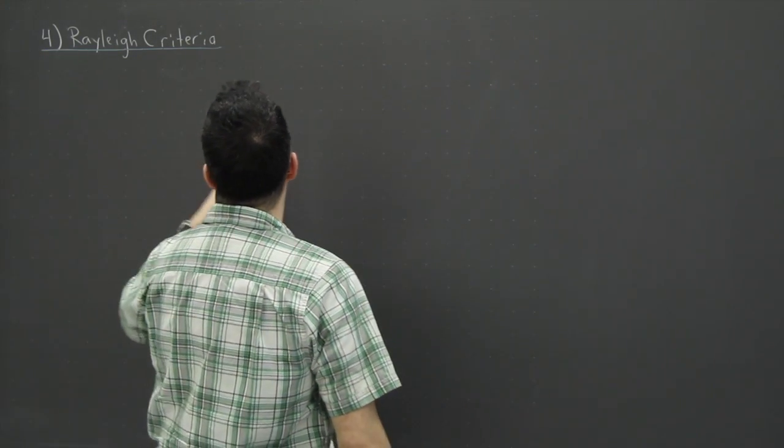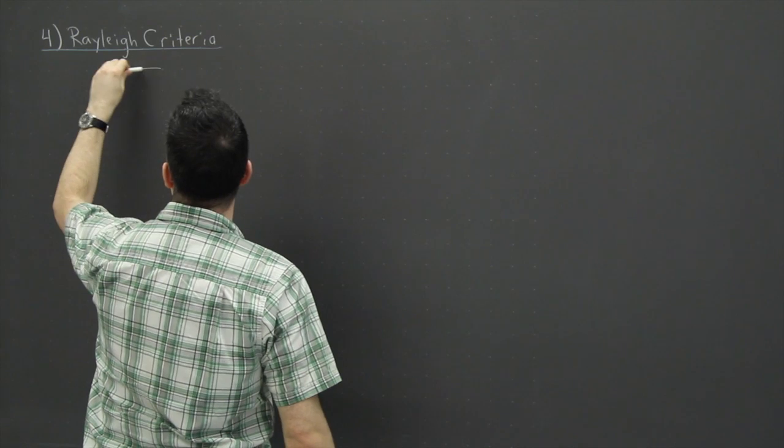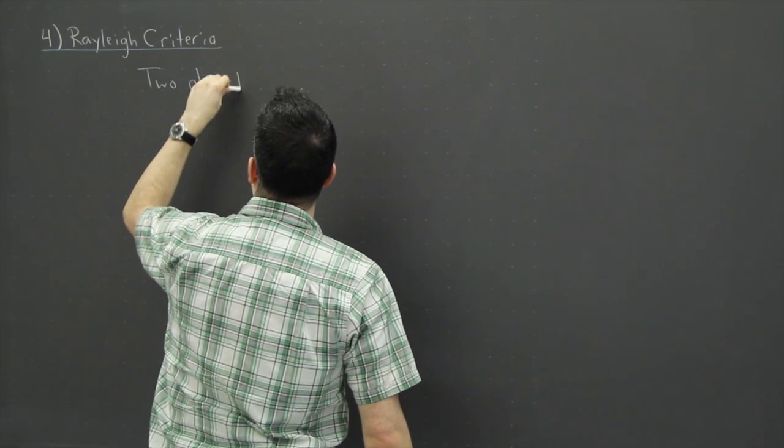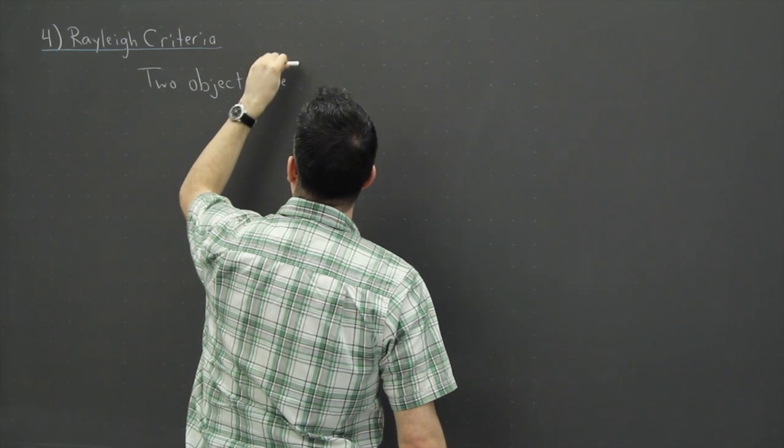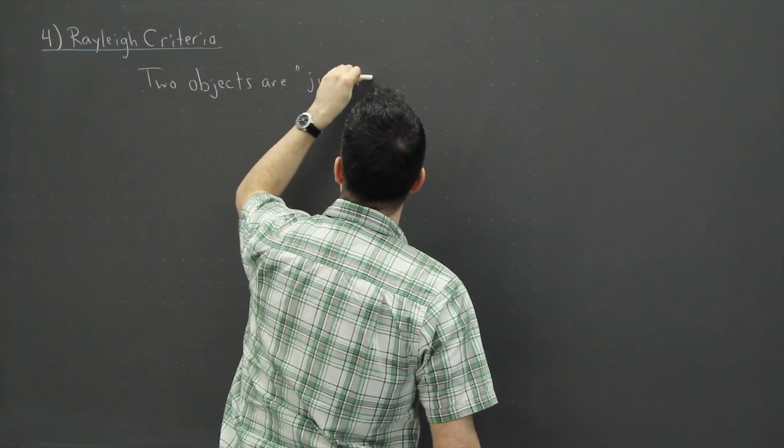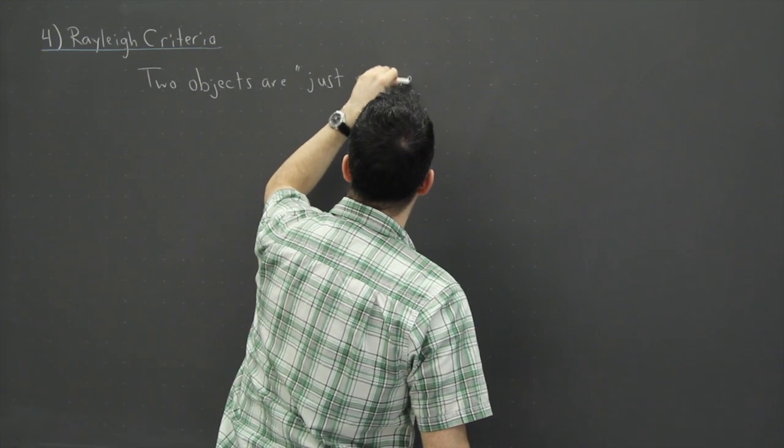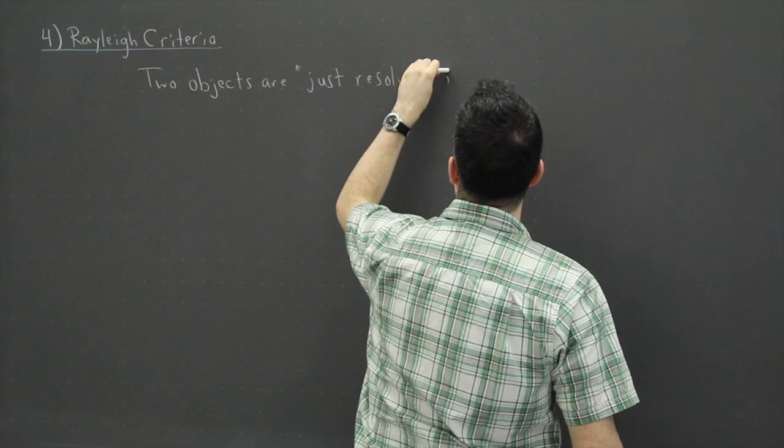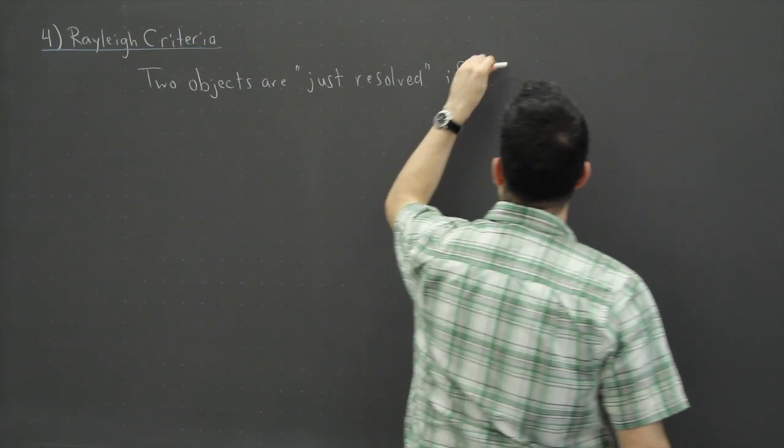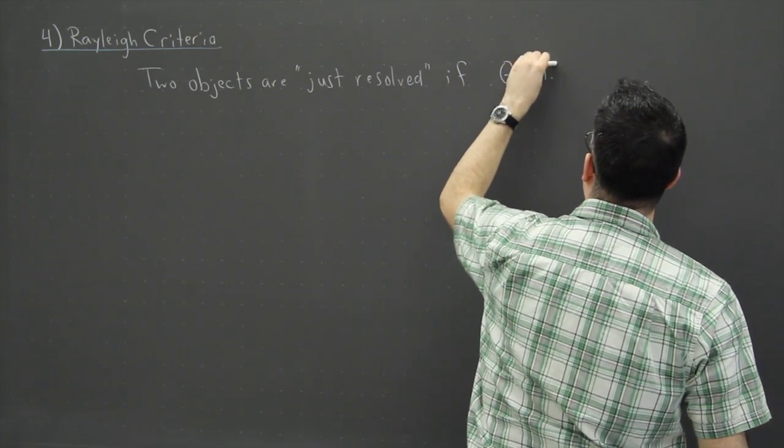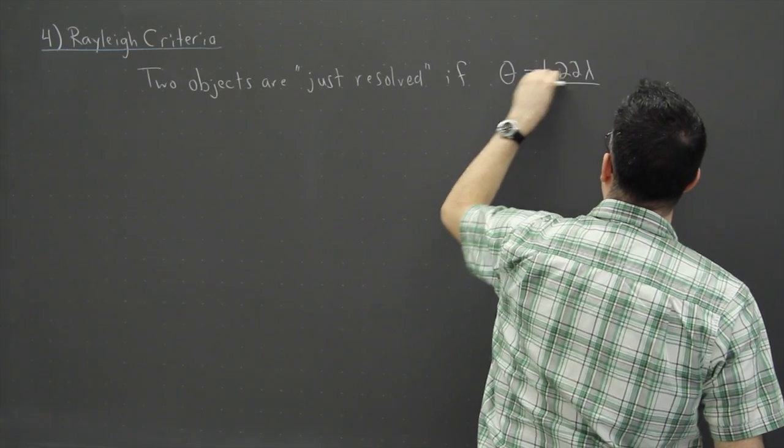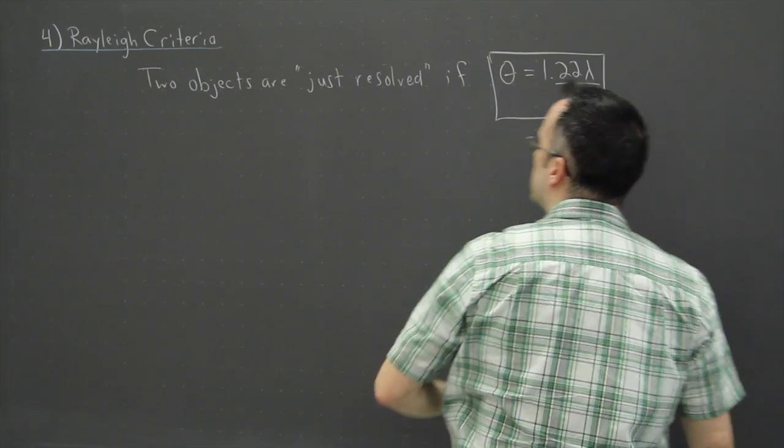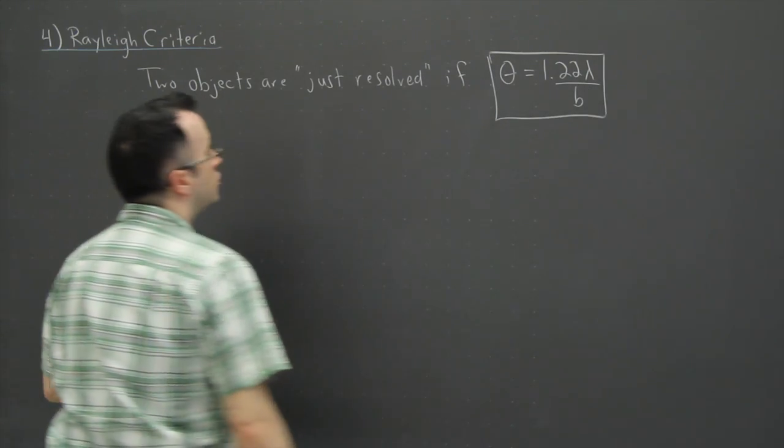So we'll say that in this case right here, two objects are what we consider, what we say, just resolved. If we have this happening, so theta is 1.22 lambda over b. This is the main equation for Rayleigh criteria here. Two objects are just resolved.